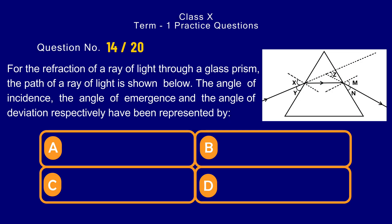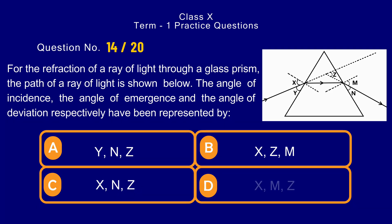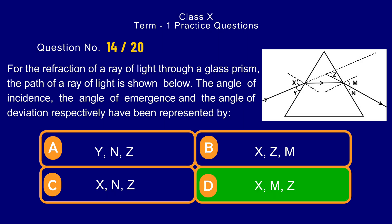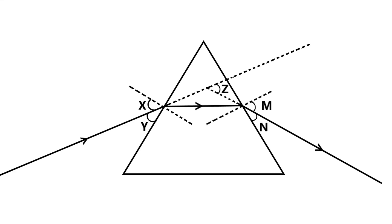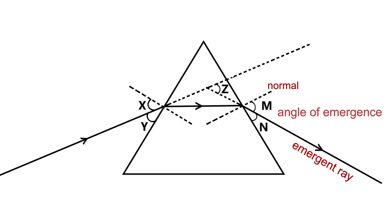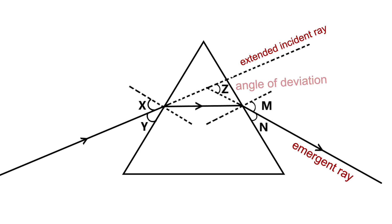Question number 14. For the refraction of a ray of light through a glass prism, the path of a ray is shown below. The angle of incidence, angle of emergence, and angle of deviation have been represented respectively by — options: a) y and z, b) x, z, m, c) x, n, z, d) x, m, z. The correct answer is option d) x, m, z. Angle of incidence is the angle between the incident ray and the normal — angle x in the diagram. Angle m is the angle of emergence. Angle of deviation is the angle between the direction of incident ray and emergent ray — angle z in the diagram.